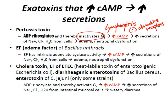The cholera toxin or heat-labile toxin of ETEC, diarrheogenic enterotoxins of Bacillus cereus, and enterotoxins of C. jejuni (only some strains) all ADP ribosylate and therefore activate Gs. If you inactivate Gi or activate Gs, you get increased cyclic AMP, leading to increased secretions — sodium chloride and water follows from the intestinal mucosa, giving you watery diarrhea. When you activate Gs you get watery diarrhea; when you inactivate Gi you get more neutrophil dysfunction and lymphocytosis.